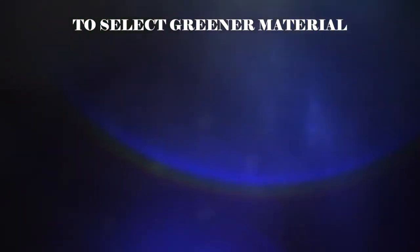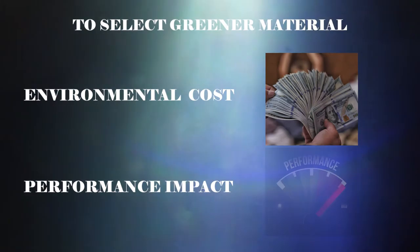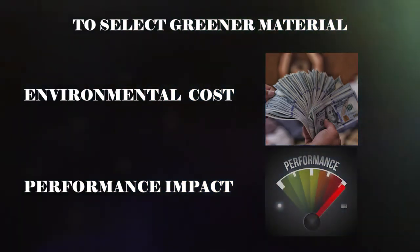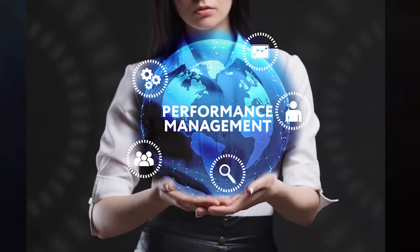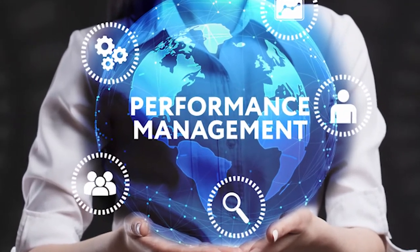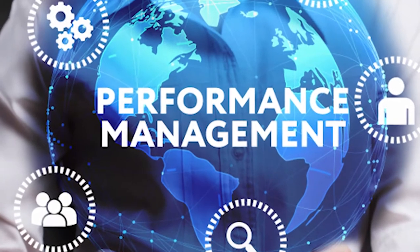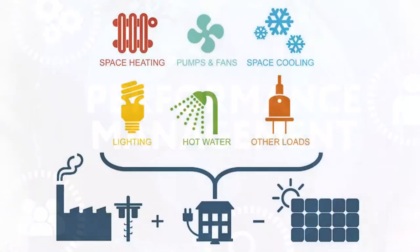To select greener material, you need to consider the material's environmental cost and performance impact on your design. A material's performance depends on its physical properties, and optimizing this is the most important way to reduce your product's environmental impact. Energy use often causes the biggest environmental impact for products that consume much energy during their use, like a refrigerator and car.